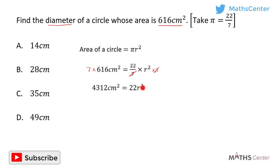To find r, I'll divide both sides by 22. 4312 cm squared divided by 22 gives us 196 cm squared. So r squared equals 196 cm squared.